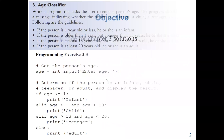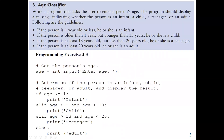Our main objective is to solve two problems. The first problem is Age Classifier. We should write a program that asks the user to enter a person's age. The program should display a message indicating whether the person is an infant, a child, a teenager, or an adult. We have four conditions, which means we can use if, elif, elif, and else.